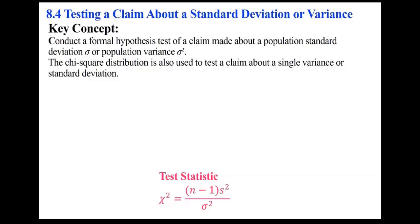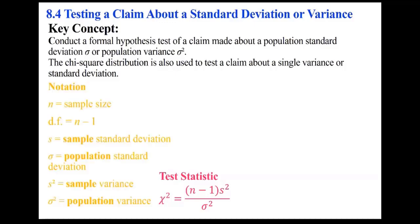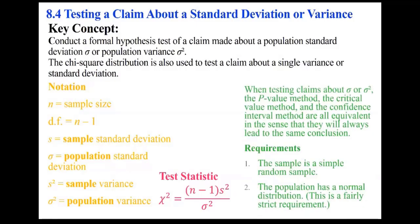The test statistic chi-square is (n minus 1) times s squared over sigma squared. The notation is straightforward: n is sample size, degrees of freedom is n minus 1, s is the sample standard deviation, sigma is the population standard deviation, s squared is the sample variance, and sigma squared is the population variance.